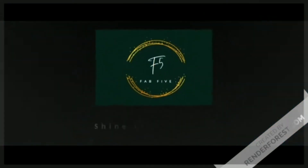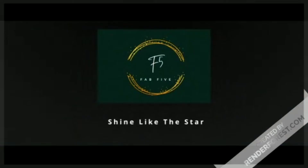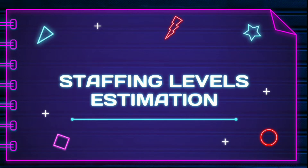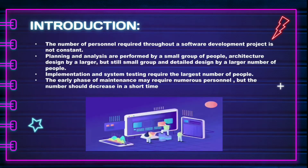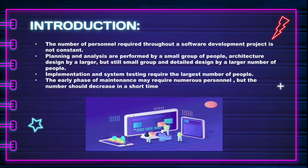Let's see the introduction about staffing levels estimation. The number of personnel required throughout the software development project is not constant. Planning and analysis are performed by a small group of people. Architecture is designed by a larger but still small group, and detailed design requires a large number of people. Implementation and system testing require the largest number of people.